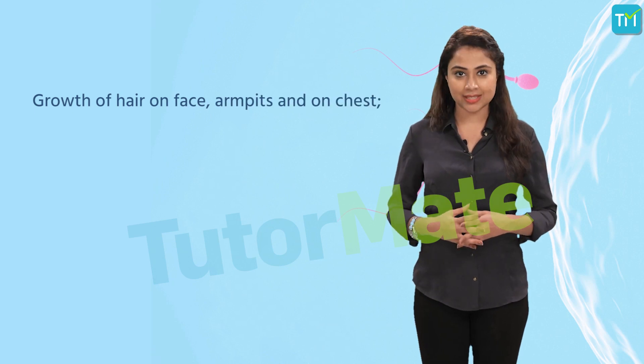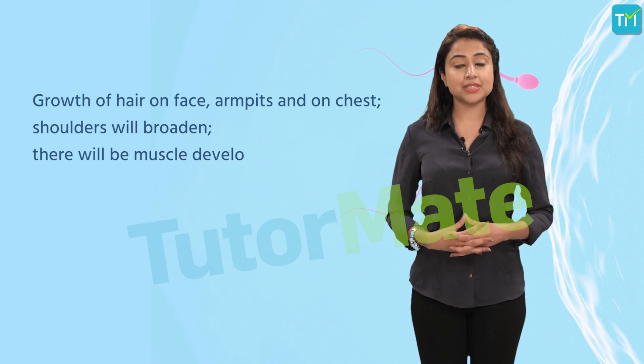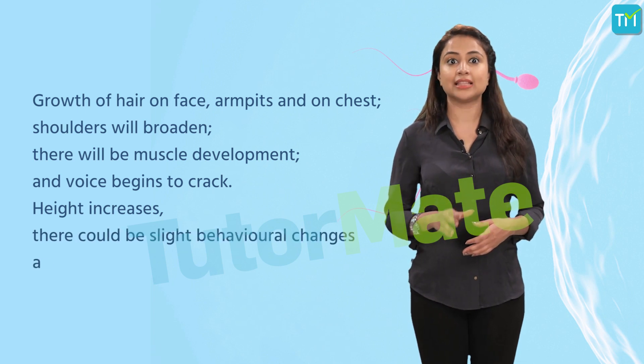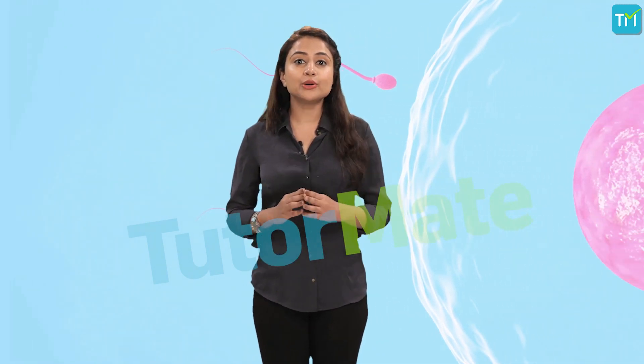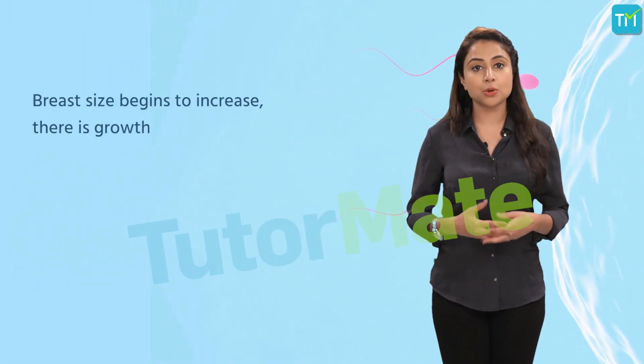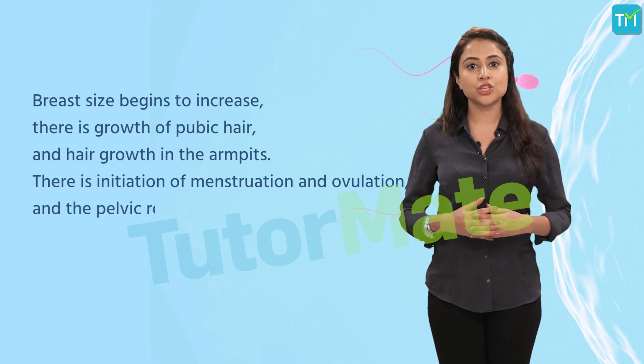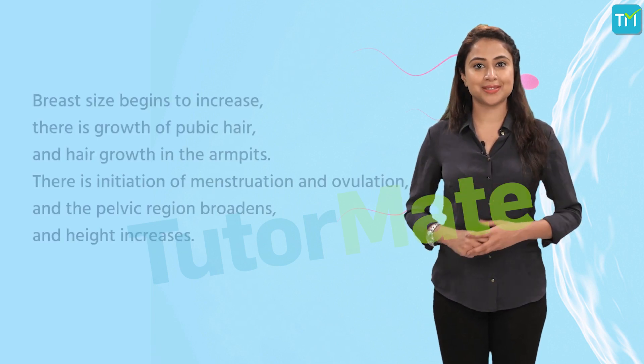Puberty is the age at which an individual's reproductive organs mature and secondary sexual characteristics develop. In males, secondary sexual characteristics include growth of hair on face, armpits, and chest; broadening of shoulders; muscle development; voice begins to crack; height increases; and there could be slight behavioral changes and enlargement of the penis. In females, breast size begins to increase, there is growth of pubic hair and hair in the armpits, initiation of menstruation and ovulation, broadening of the pelvic region, and increase in height.